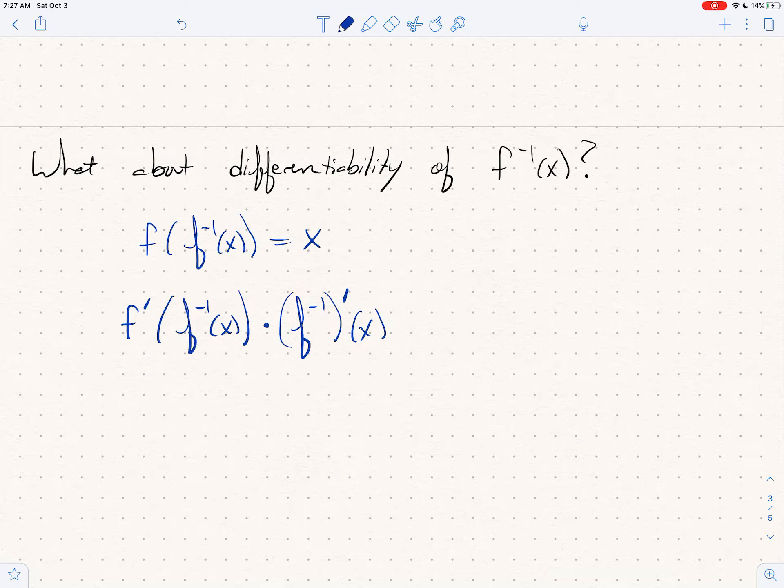So this is F inverse of F inverse of X times F inverse prime of X. And by the way that's just one, because we know this identity.